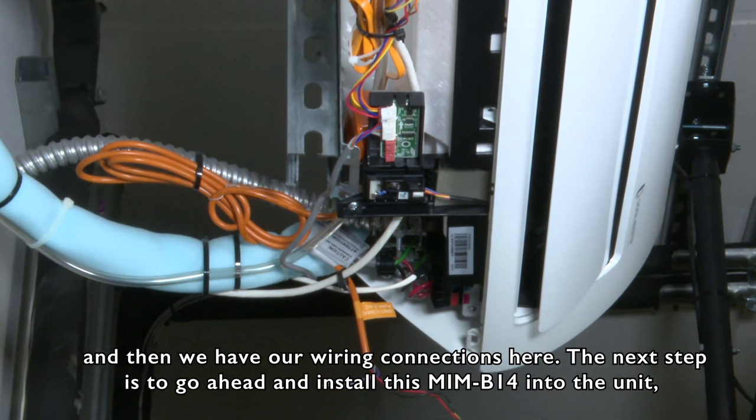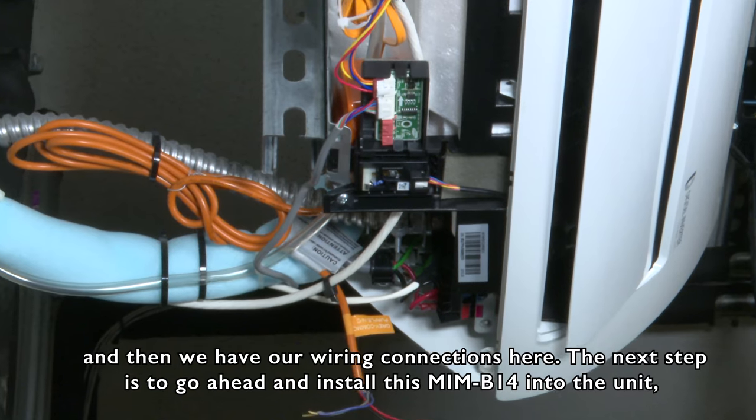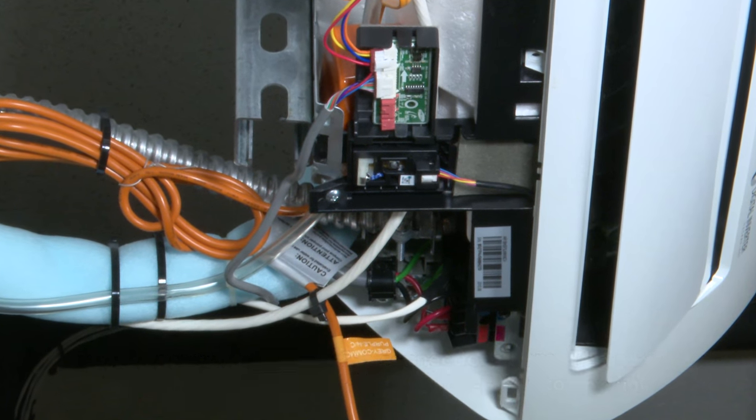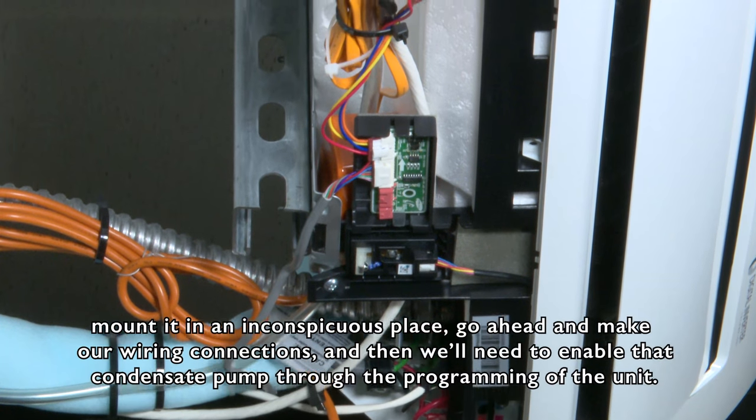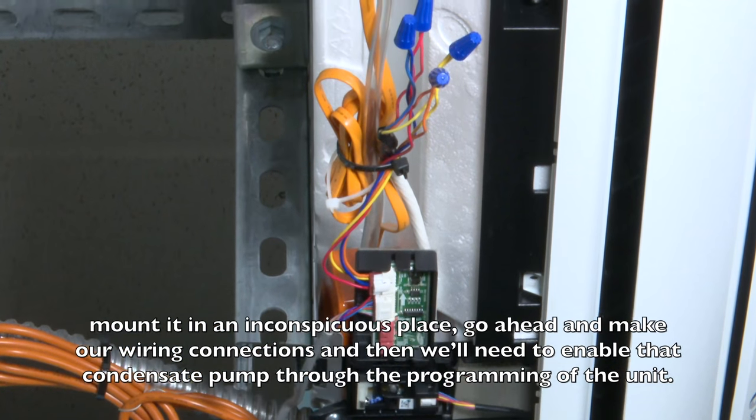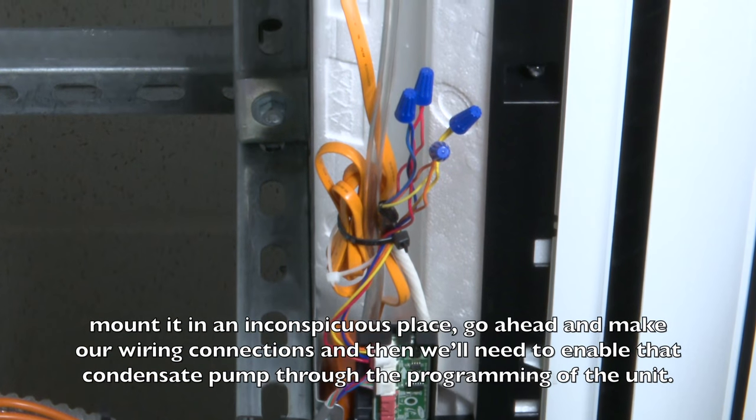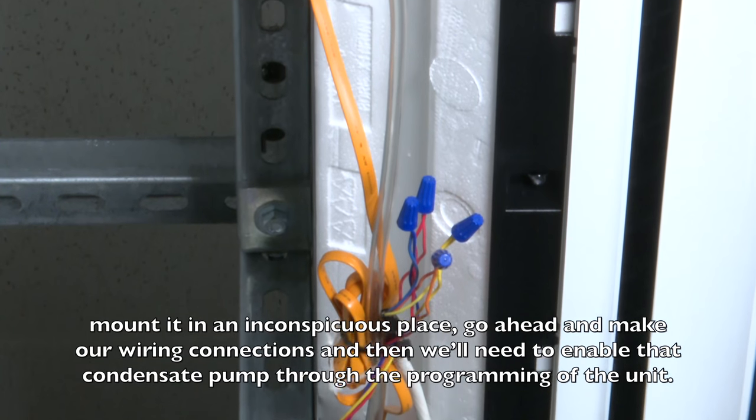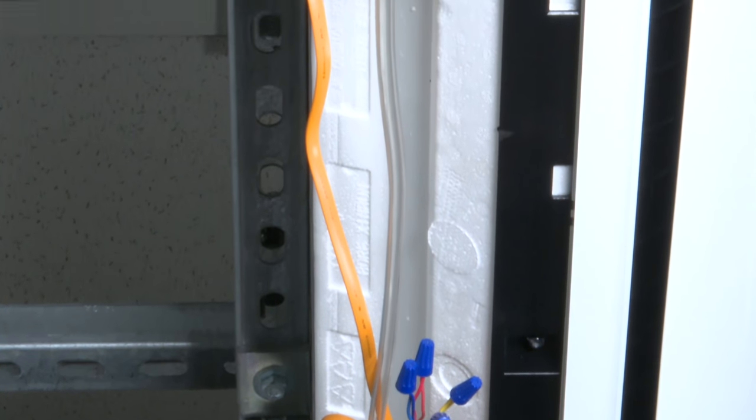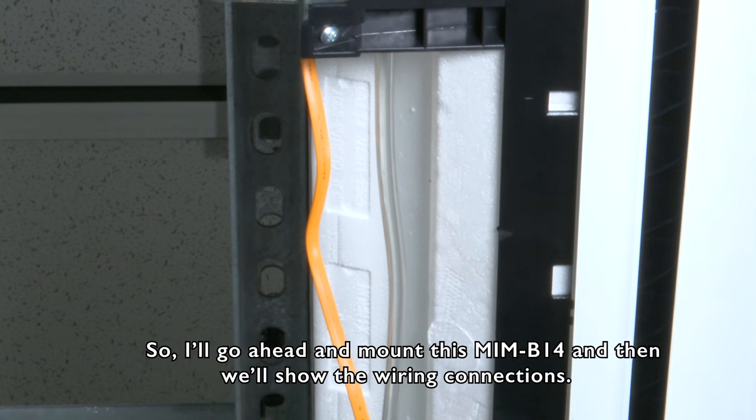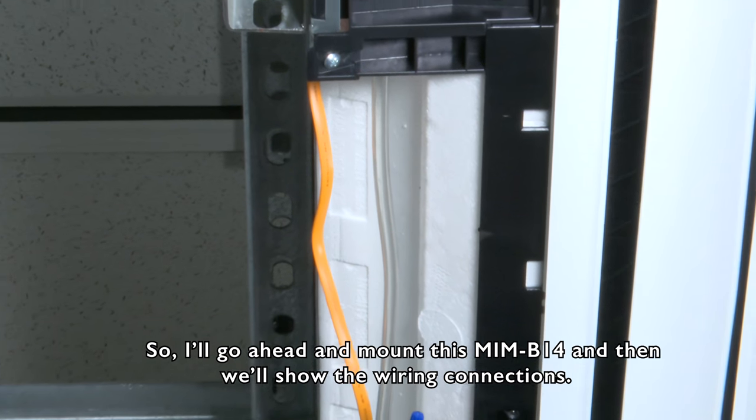The next step is to install this MIM-B14 into the unit, mount it in an inconspicuous place, make our wiring connections, and then we'll need to enable that condensate pump through the programming of the unit. I'll go ahead and mount this MIM-B14, and then we'll show the wiring connections.